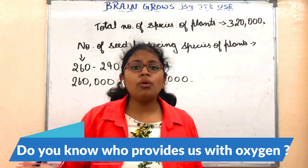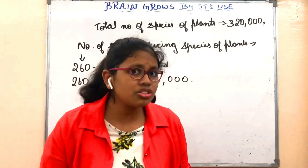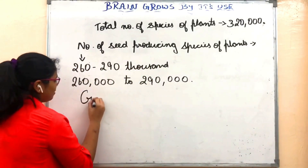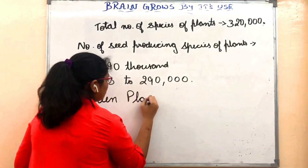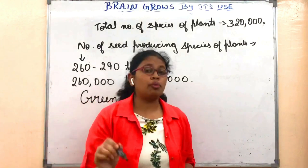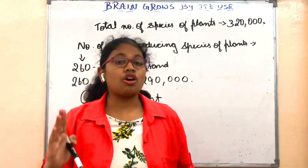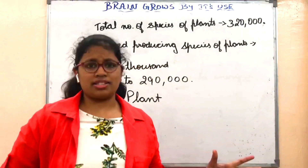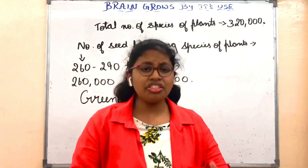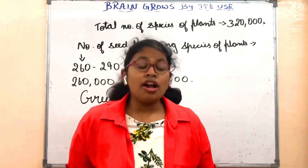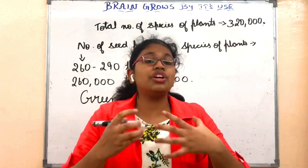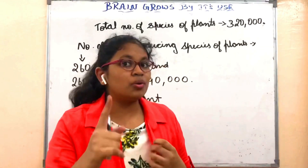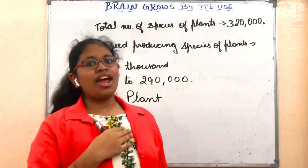Do you know who provides us with a substantial proportion of molecular oxygen? The green plants. Green plants provide us with a substantial proportion of molecular oxygen and are the basis of most of the earth's ecosystem. There are many plants on this earth with a variety of uses — they are helpful for us in many ways, providing us with life-giving oxygen, which is really important for our existence. And another important thing is food.